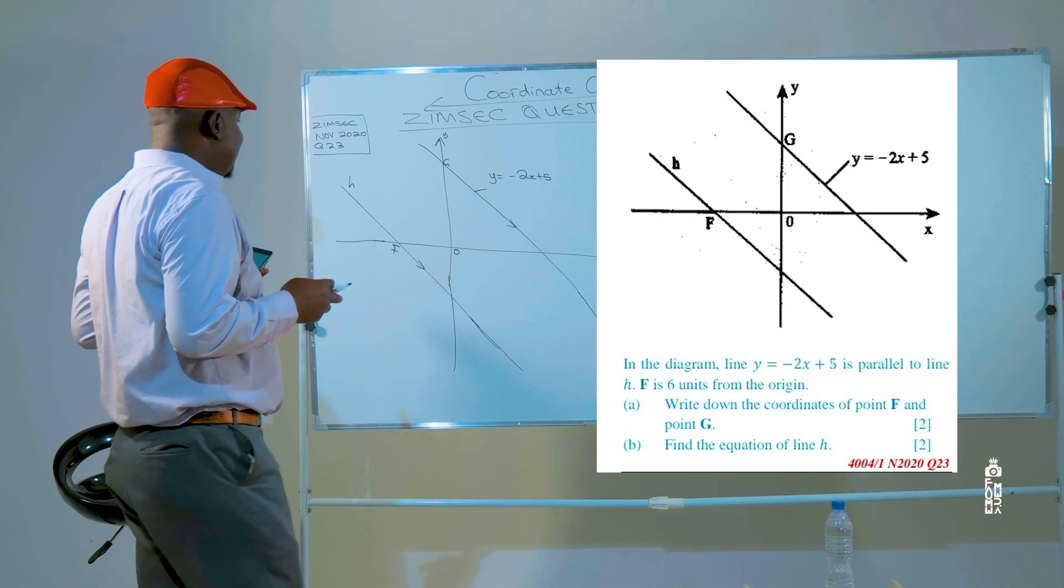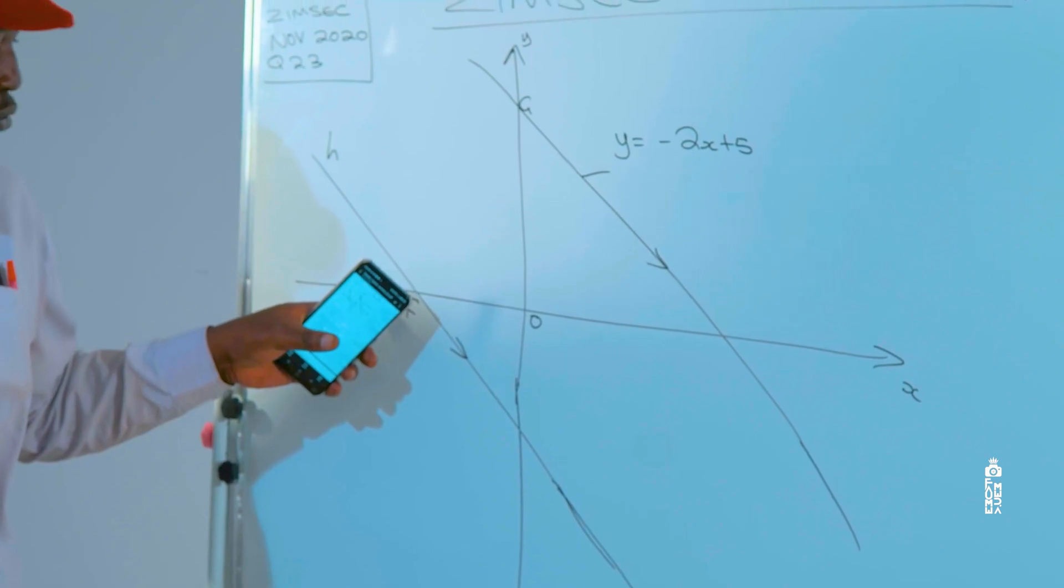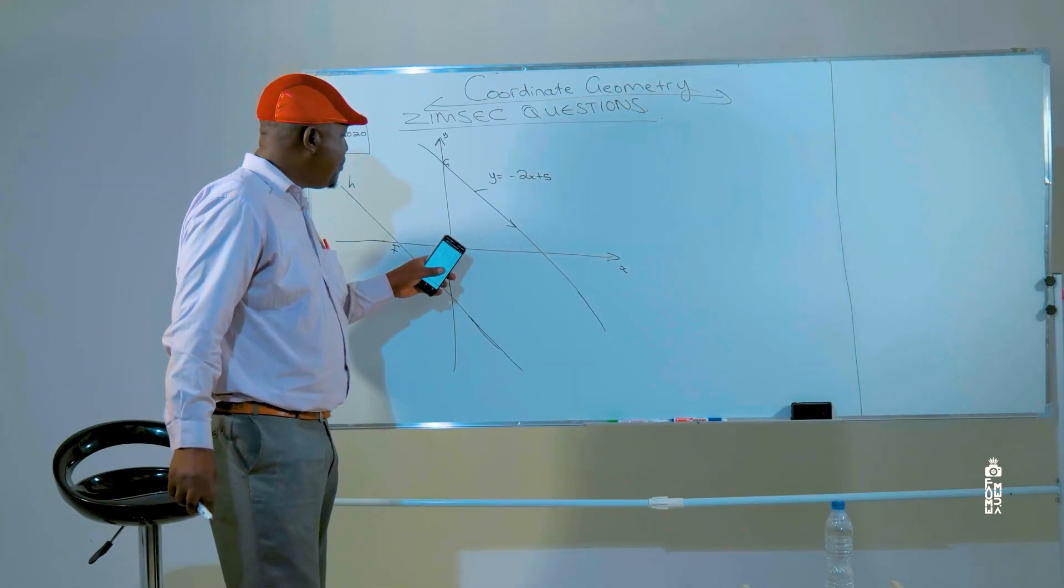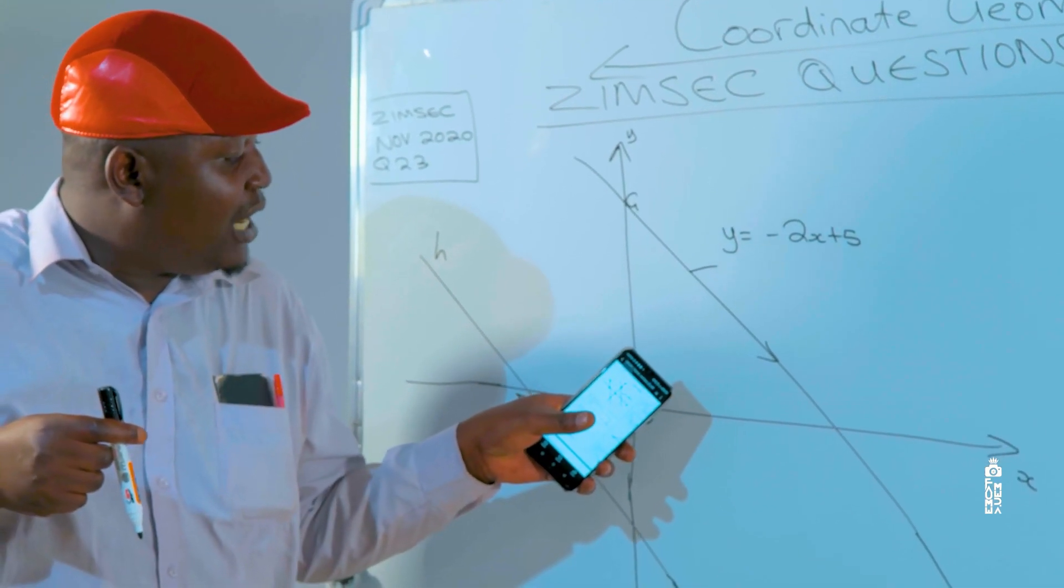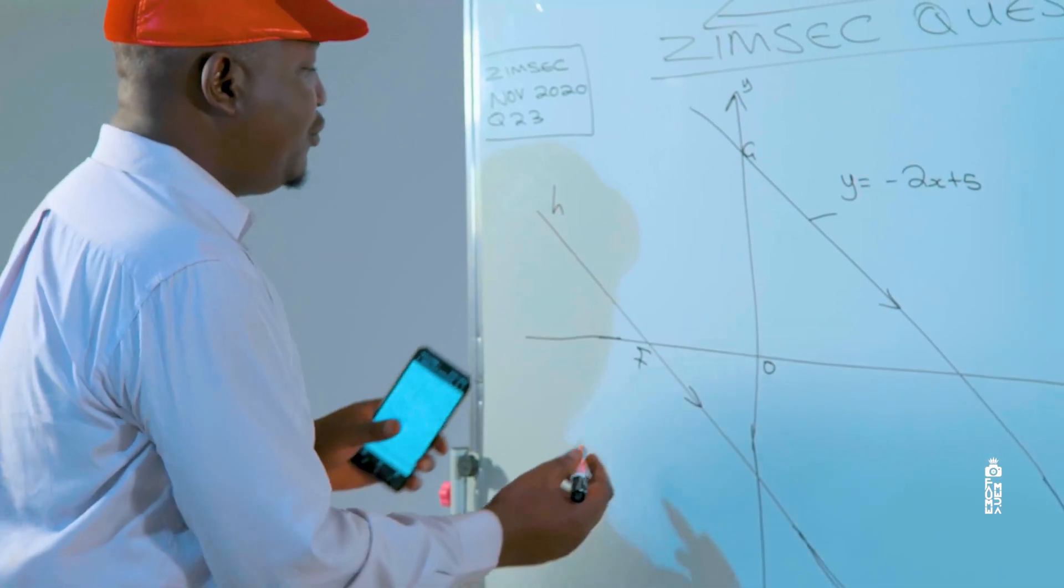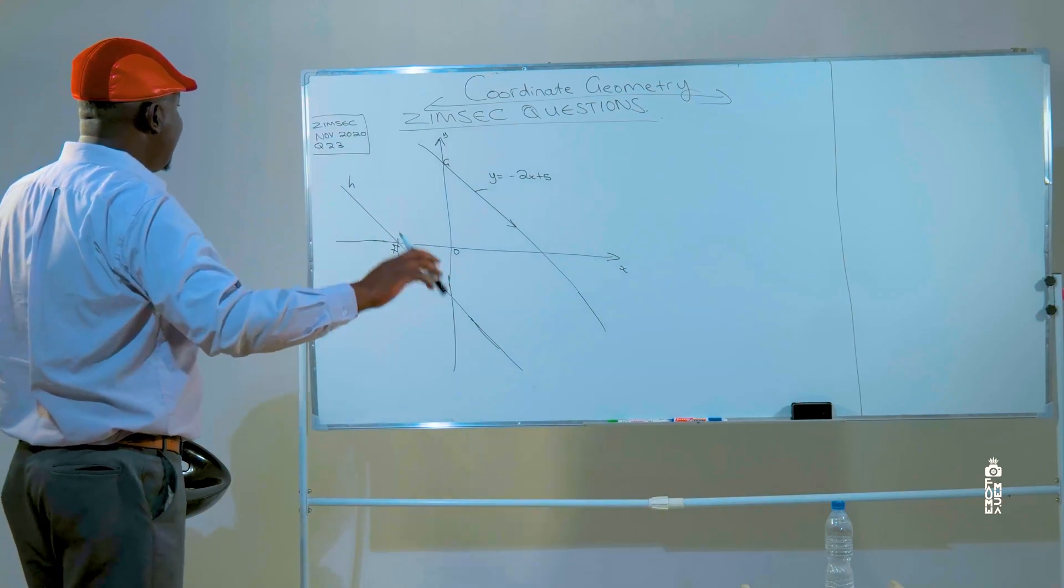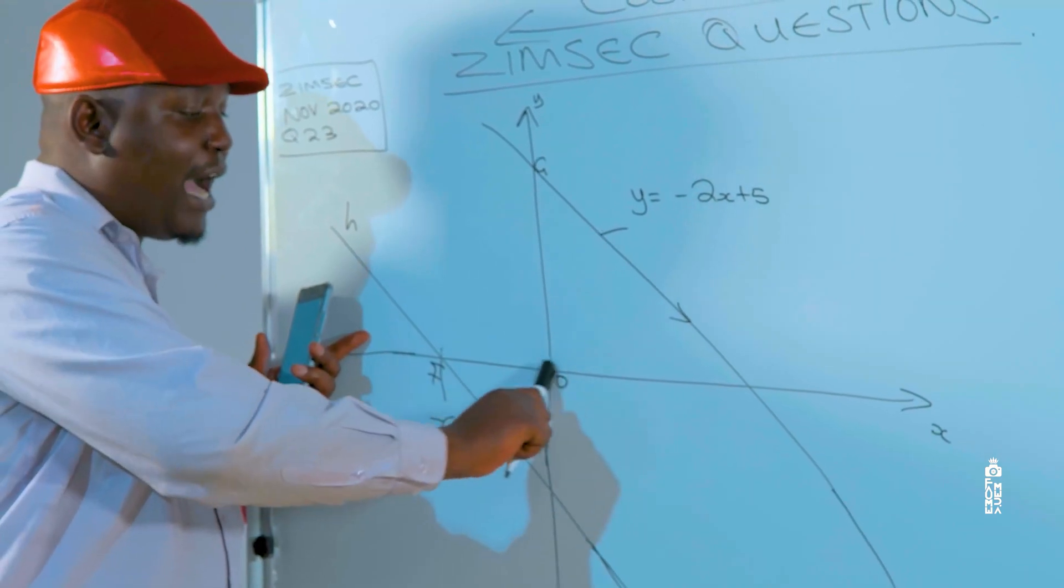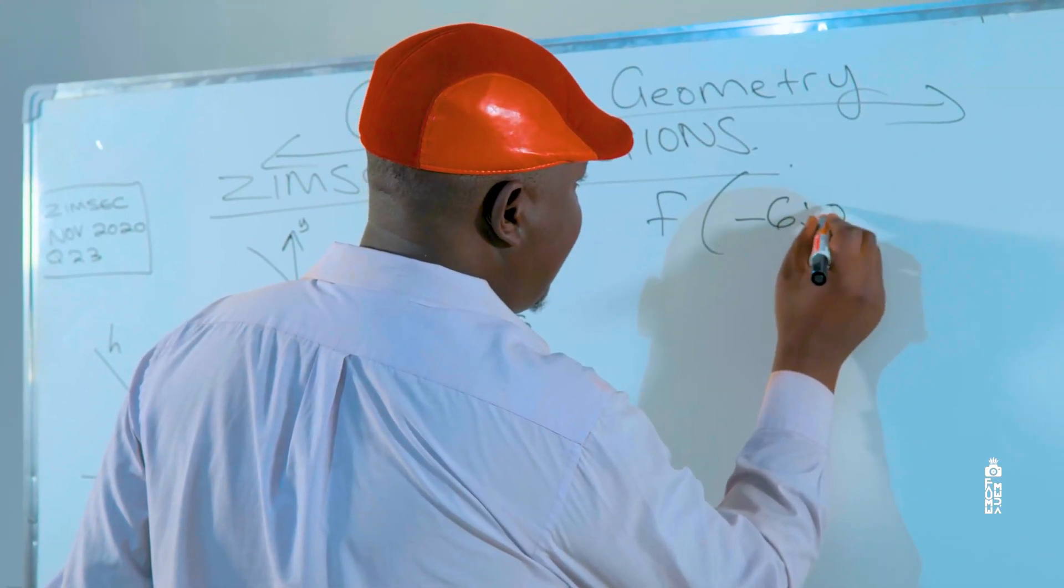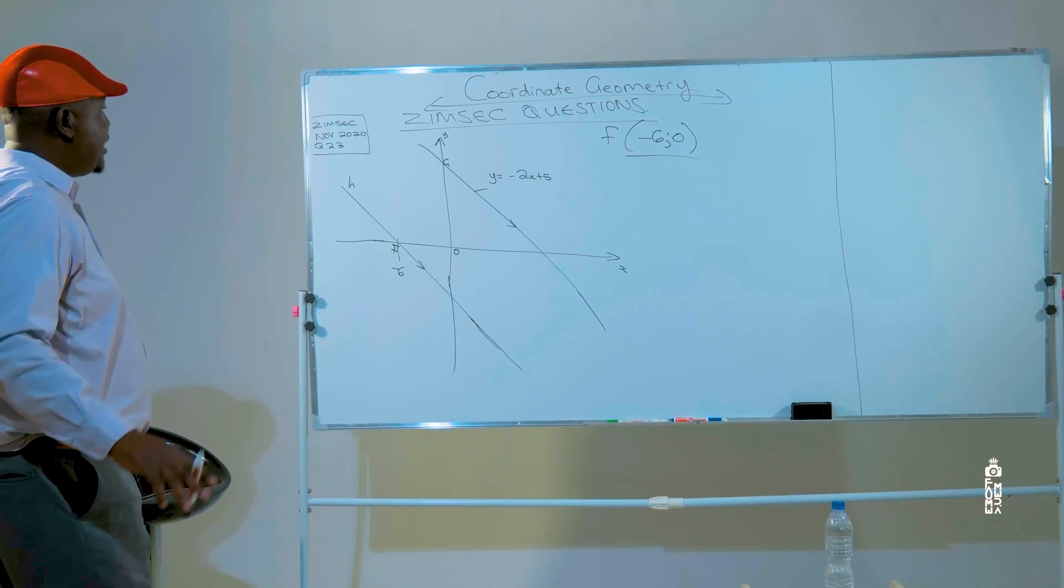The question that we have here is saying that we have six units from the origin to point f. And anything that is going to come to the left side has negative coordinates. So the point f on the x-axis is going to be negative 6. And on the x-axis, the value of y is 0, so point f has got coordinates minus 6, 0. And for that very small effort we are going to get one mark.